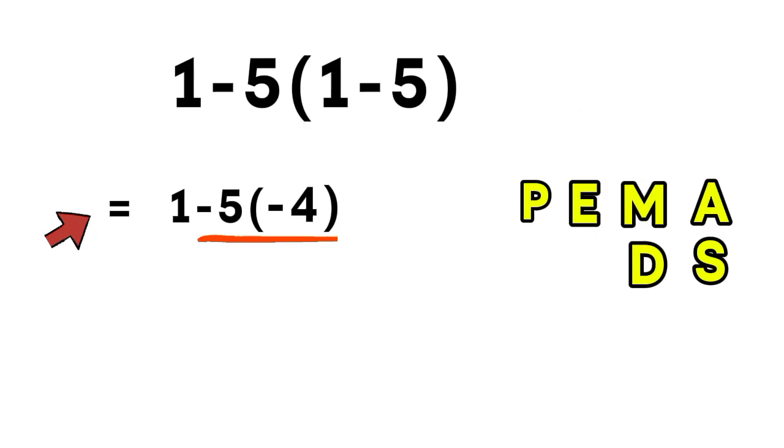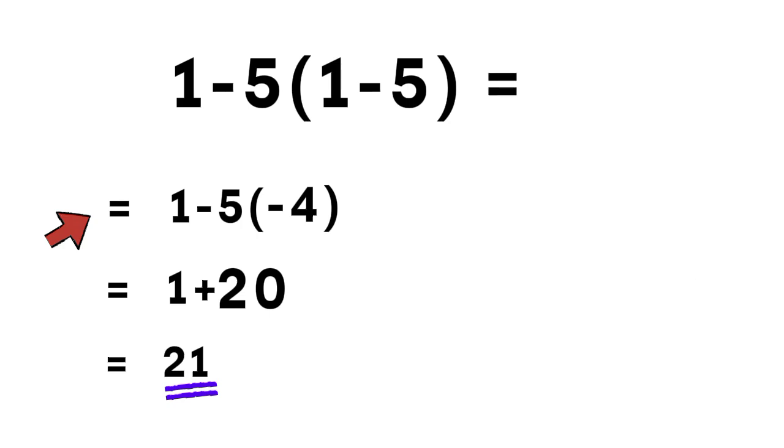Negative 5 times negative 4 gives us positive 20. Now we have 1 plus 20, and 1 plus 20 equals 21. That is our final answer. The correct answer is 21.